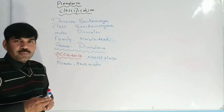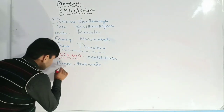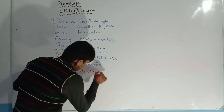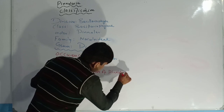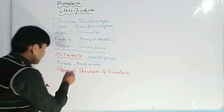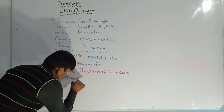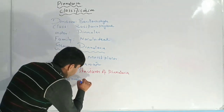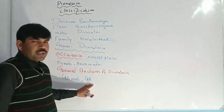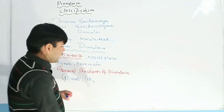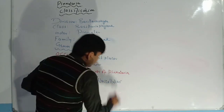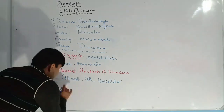Now we are going to study about the general structure of Pinnularia. First, we will talk about the cell. If we talk about the cell of Pinnularia, then we can say that Pinnularia is unicellular. If we talk about the shape, then the shape is elongated.